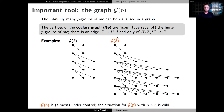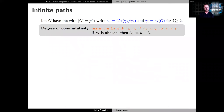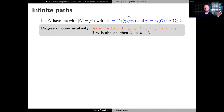One focus in co-class theory is understanding these graphs better, and the first thing I want to look at is these infinite paths. For this we need the notion of degree of commutativity. Let's take a group of maximal class, look at its lower central series terms, and extend by one additional term called the two-step centralizer. The degree of commutativity essentially measures how far commutation goes down in this chain.